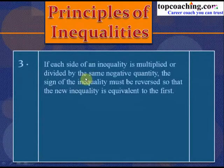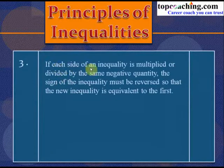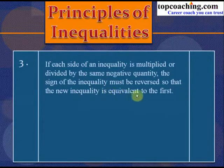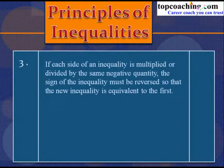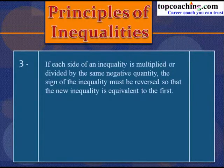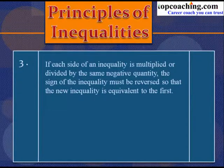The next principle: if each side of an inequality is multiplied or divided by the same negative quantity, the sign of the inequality must be reversed so that the new inequality is equivalent to the original. So a greater-than inequality becomes a less-than inequality.